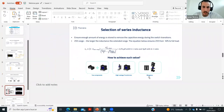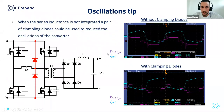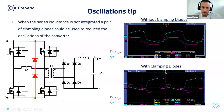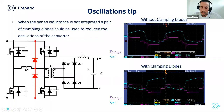One more thing: when you have two components, you can use clamping diodes. It's typical in the phase-shift full-bridge to have oscillations between the leakage inductance and the parasitic capacitance of diodes, creating voltage spikes. Clamping diodes, as proposed by Ridley years ago, allow you to clamp the voltage — in one example with a 3 kW transformer, we reduced the voltage from 784 V to 496 V.